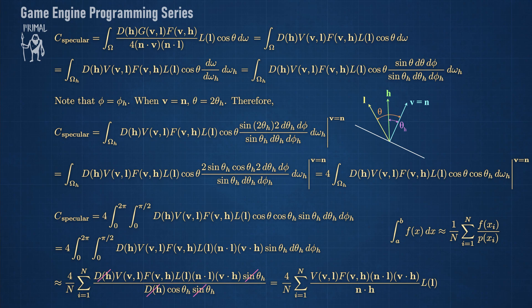Again, these terms cancel out and we replace cosine of theta_h by n dot h. This is the overall result of applying importance sampling to this integral.